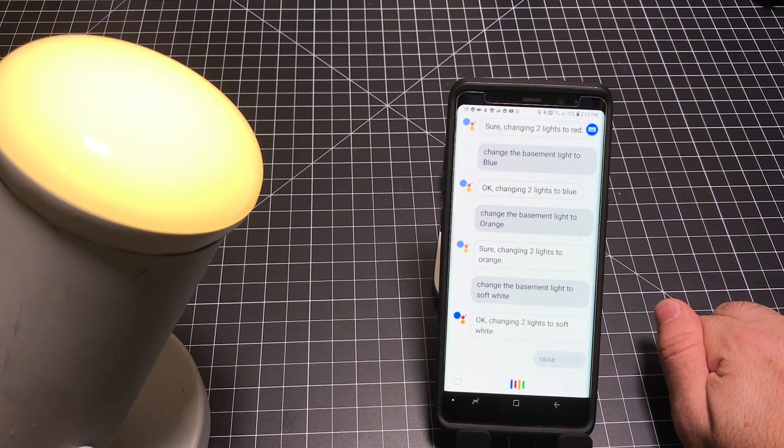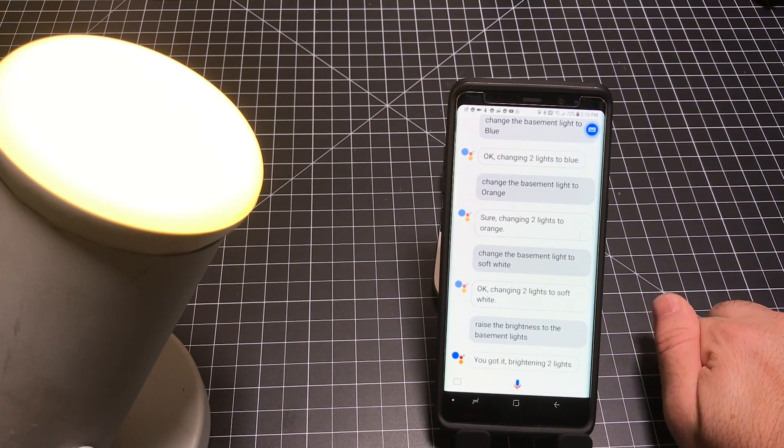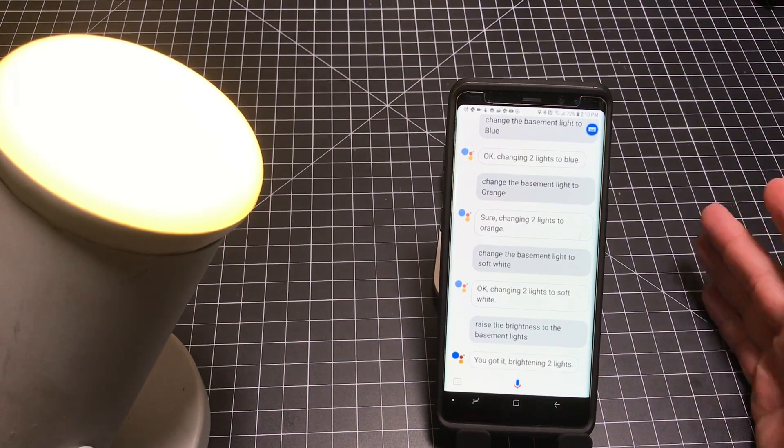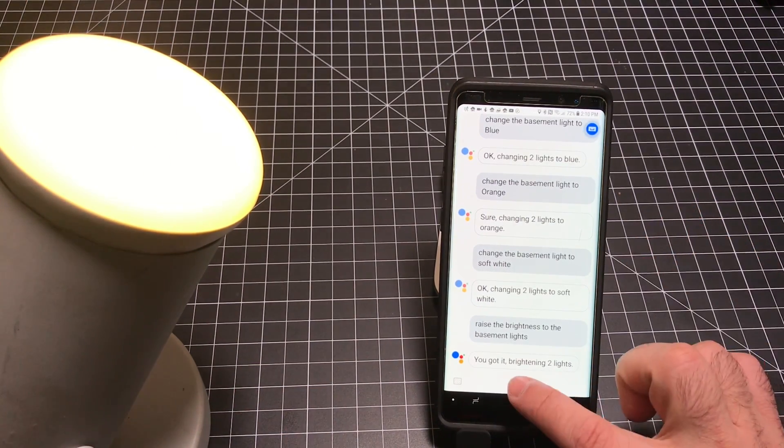Okay. Here's the other thing you can do. Raise the brightness to the basement lights. You got it. Brightening two lights. So, you see, a lot of flexibility. You notice it's very fast. And then you can just turn it off by just saying this.